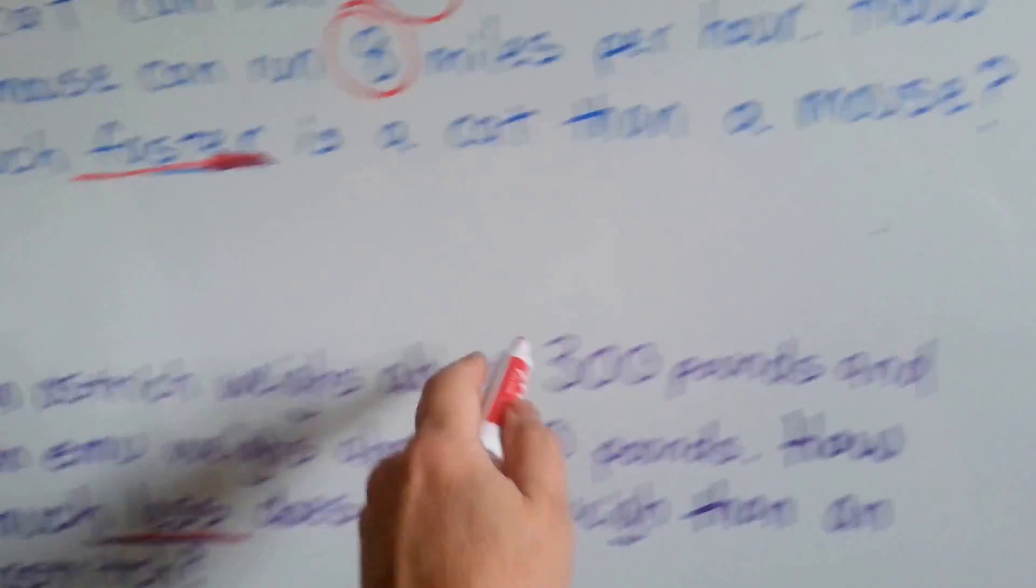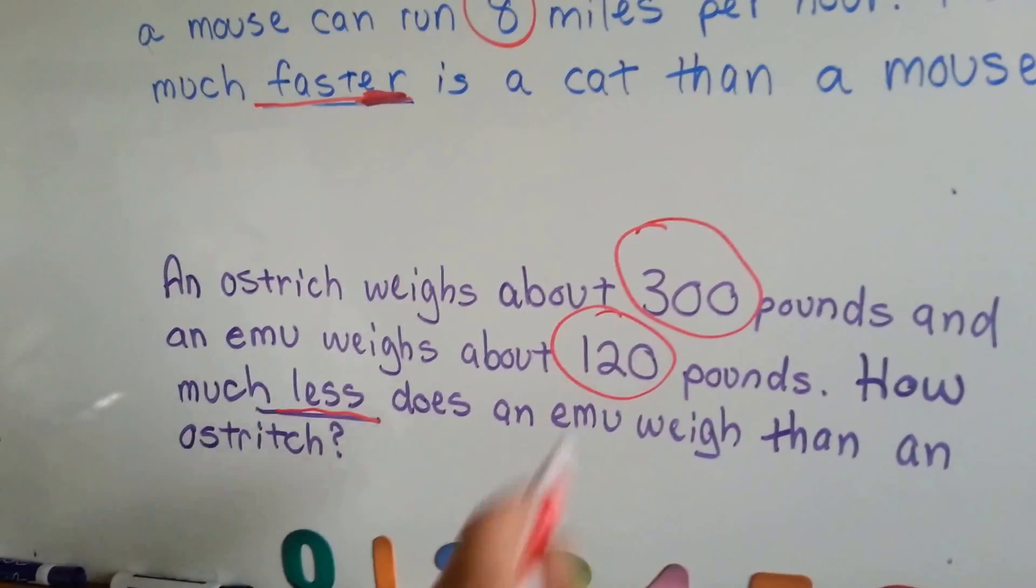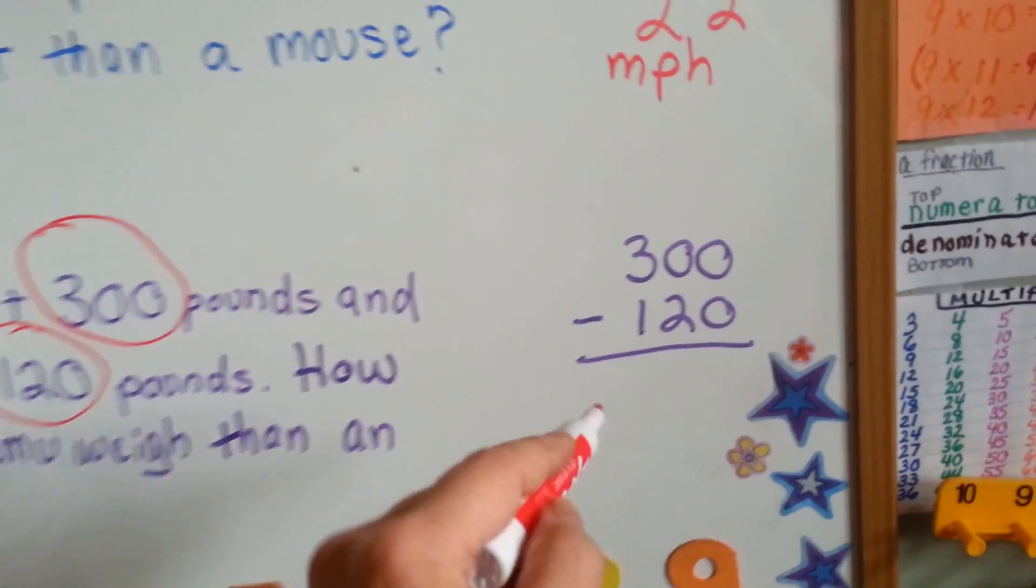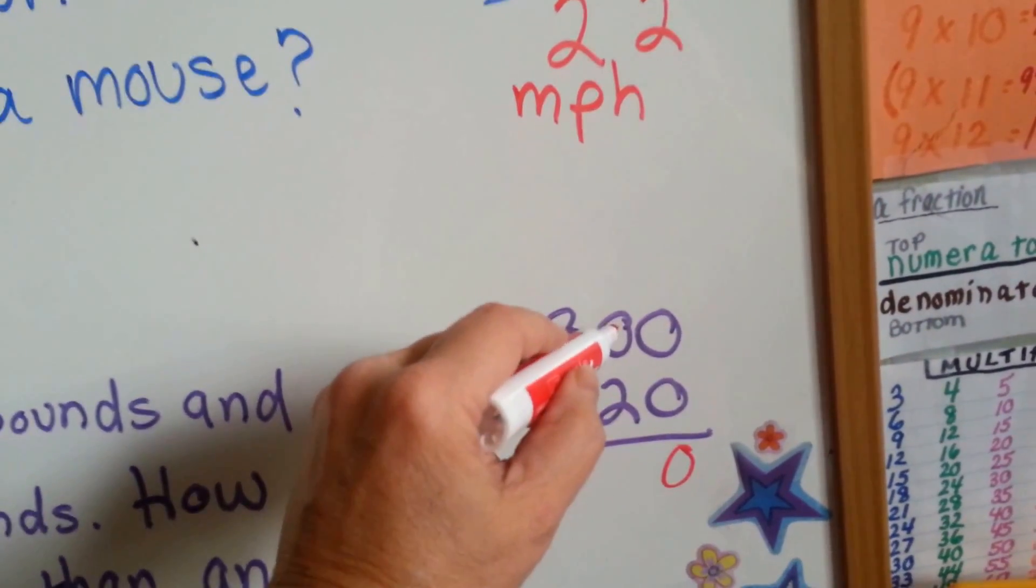So, we're going to identify our numbers 300 and 120. That's what we need to subtract. 300 minus 120. 0 take away 0 is 0. Can you have 0 and take 2 away? Nope.